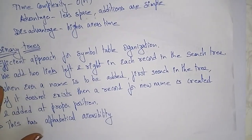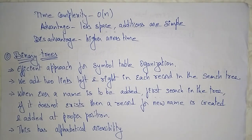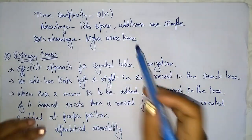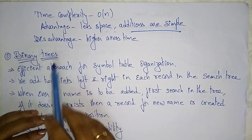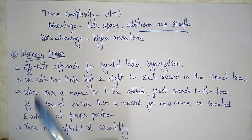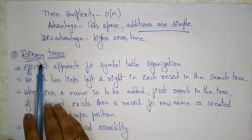The time complexity of the linear list data structure is O(n). It is the easiest way to implement the symbol table. The advantage of a linked list is that it occupies less space and adding records is simple. The disadvantage is higher access time — if you want to search a record in the linear list, it takes more time.